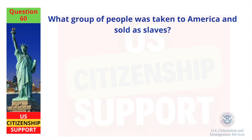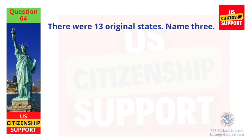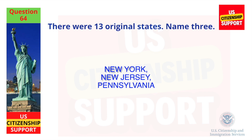What group of people was taken to America and sold as slaves? Africans. There were 13 original states. Name three. New York, New Jersey, Pennsylvania.